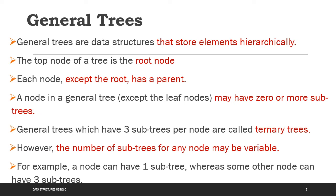For example, one node may have one subtree whereas some other node can have three subtrees. That is what makes it a general tree.